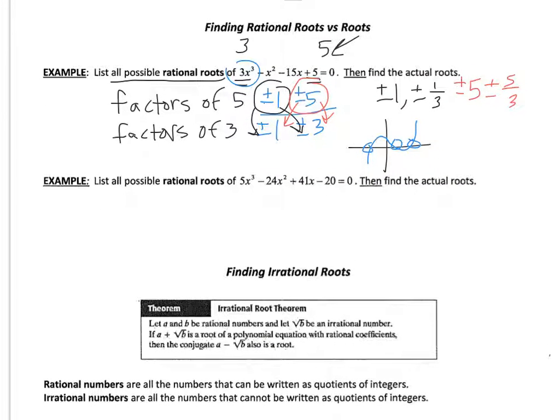And I'm going to do the same thing over here. So this is 20, so 20 is going to have a lot. Factors of 20 are 1, 2, 5, 10, and 20. Factors of 5 are just 1 and 5. And all of these are going to be plus or minus.